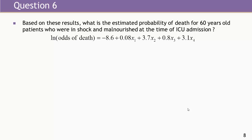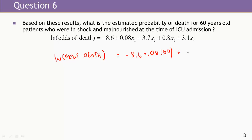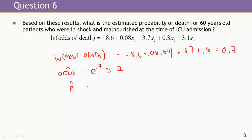I also wanted you to estimate the probability of death for 60-year-old patients in shock and malnourished. We already found that the log odds of death for this group is 0.7. So the estimated odds of death is e to the 0.7, approximately 2. If we have the odds, we can estimate the probability of death as odds over 1 plus odds — 2 over 1 plus 2 equals two-thirds, approximately 67%.